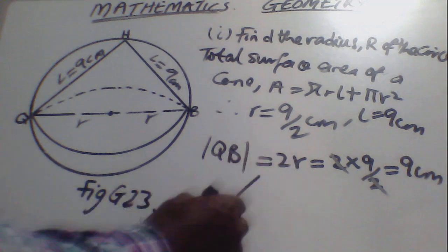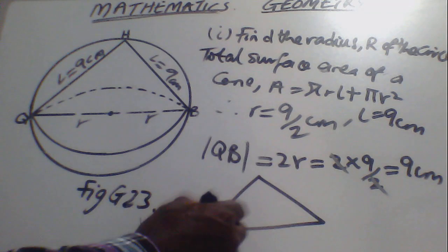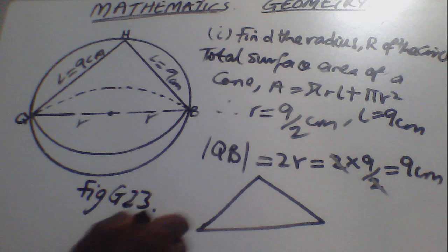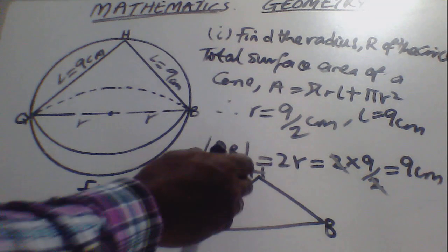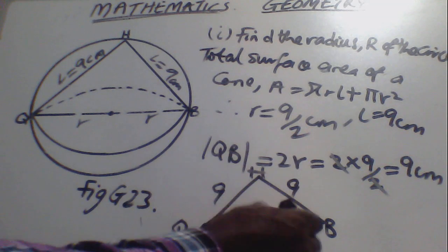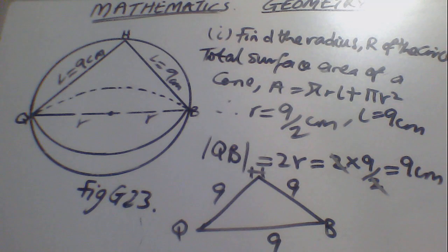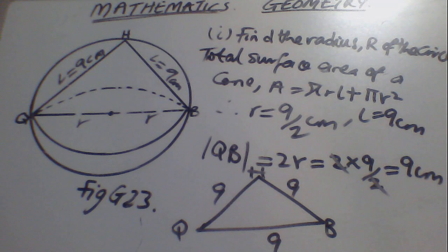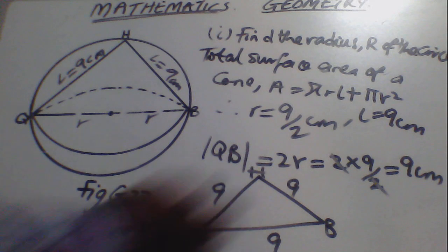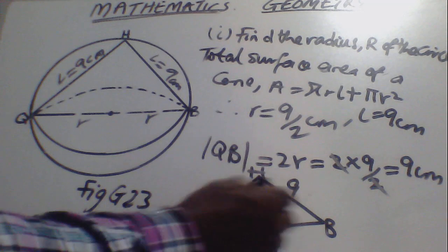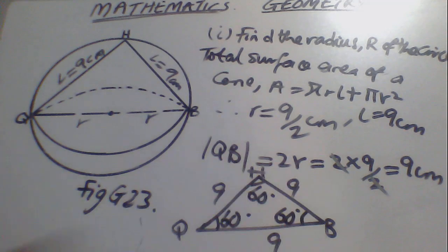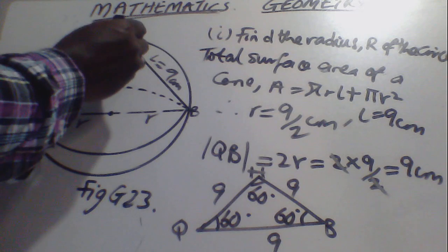We notice that triangle QHB has all sides equal to 9 cm, making it an equilateral triangle. Since it is equilateral, all angles are equal and each measures 60 degrees. So the angle at H is 60 degrees.